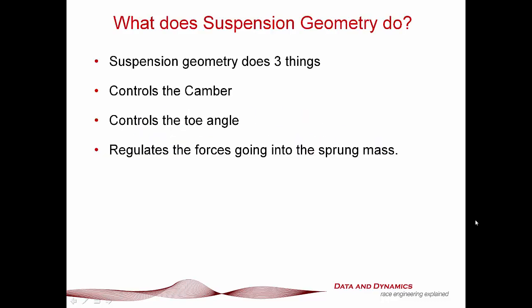Suspension geometry is probably the biggest hot button topic in either road car or race car vehicle dynamics. If you want to start a bar room brawl, just walk in and mention that the lateral location of the roll center is a huge suck-you-in — sit back and let the sparks fly. But at the end of the day, suspension geometry boils down to three things: it controls tire camber, tire toe and orientation, and most importantly, it regulates the forces going into the sprung mass. That's it.